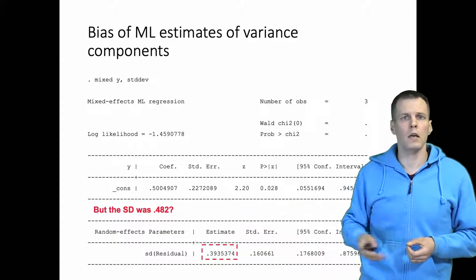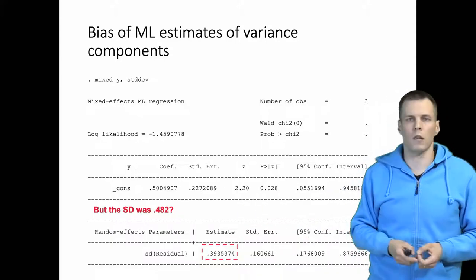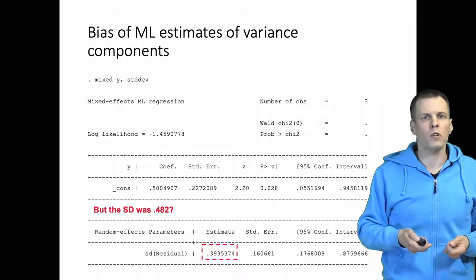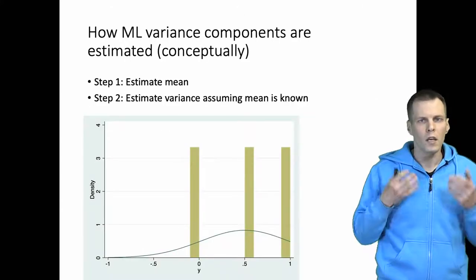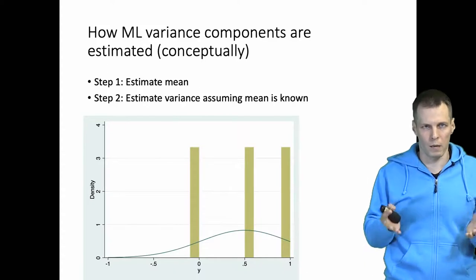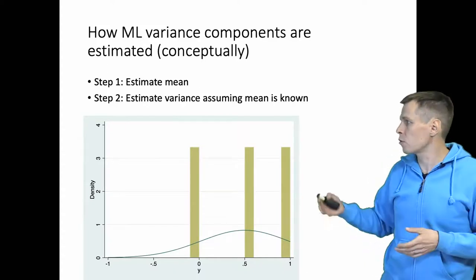This is the bias of maximum likelihood estimates. The reason for the bias is that maximum likelihood estimation, you can think of conceptually, not mathematically but conceptually, as a two-step procedure.